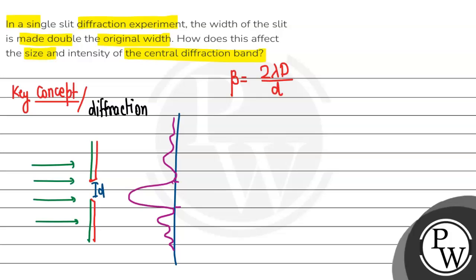This is small d and this is bigger D. So the first thing in the question is that if d is doubled, then what happens with the beta? Beta will be half.